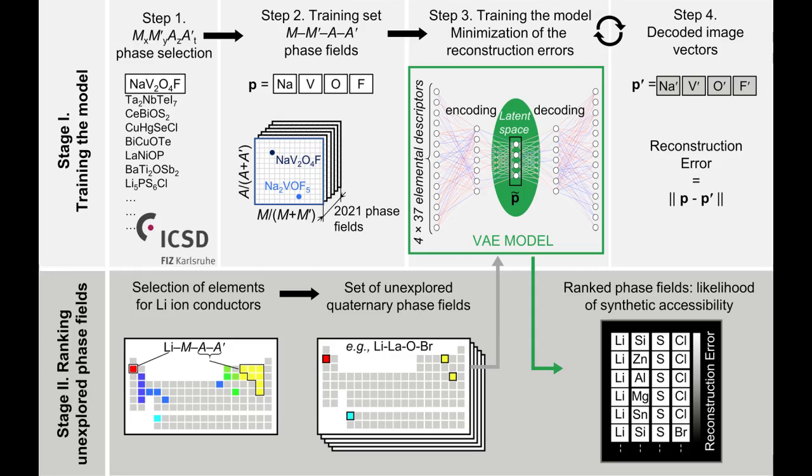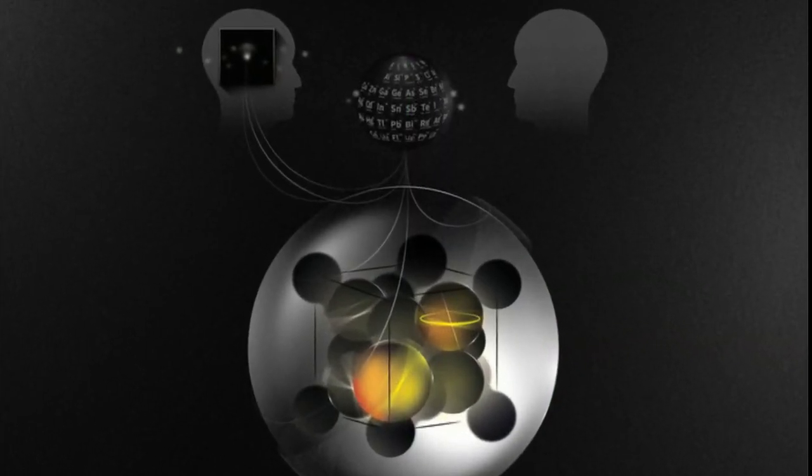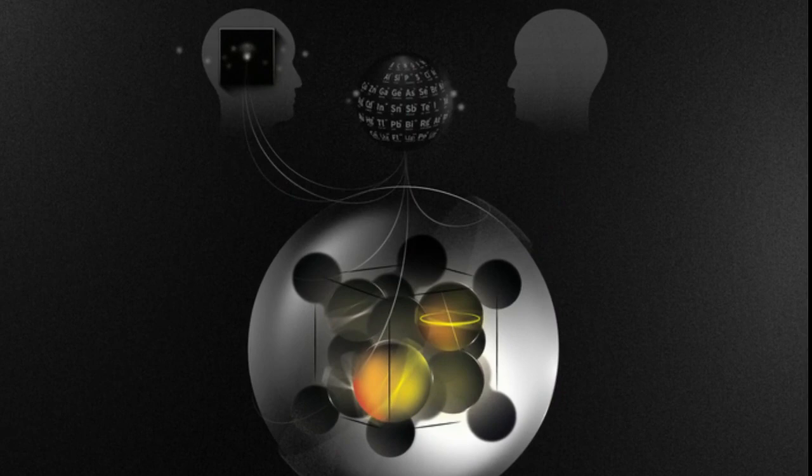The tool examines the relationships between known materials at a scale unachievable by humans. These relationships are used to identify and numerically rank combinations of elements that are likely to form new materials. The rankings are used by scientists to guide exploration of the large unknown chemical space in a targeted way, making experimental investigation far more efficient. Those scientists make the final decisions informed by the different perspective offered by the AI.